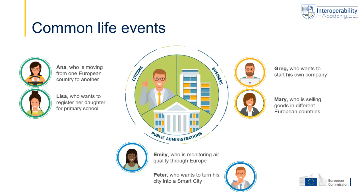Although each of them have their own specific needs and wishes, there clearly are some common elements in what they want and do not want. What they do not want is to spend many hours and many days looking for the information they need. What they also do not want is to provide the same information many different times to government, or to only interact with government by paper documents, by calling them, by visiting them. Overall, what they all want is that their government provides them their particular services and takes decisions in the most efficient and effective way.